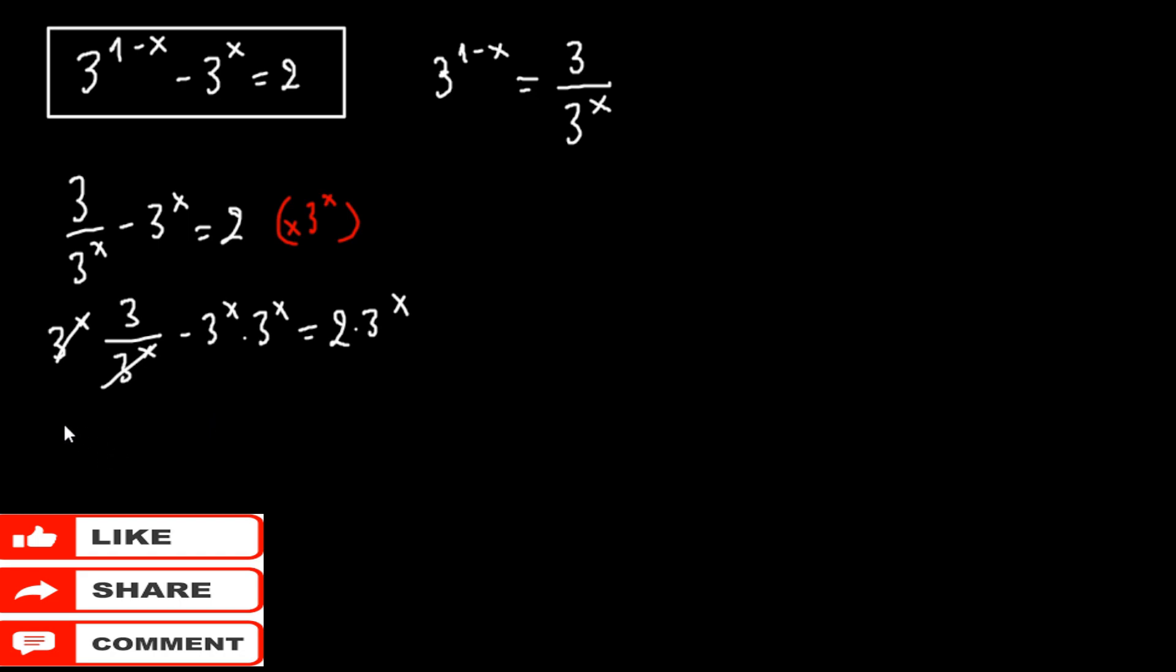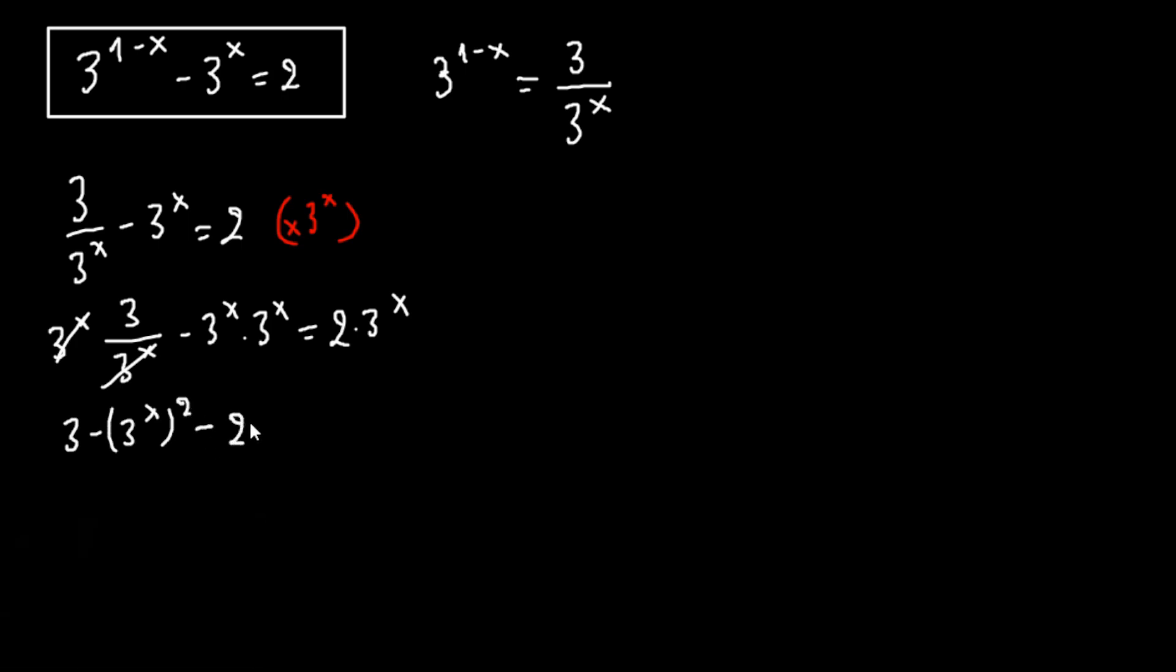So we have 3 minus 3 to the x squared minus 2 times 3 to the x equals 0.